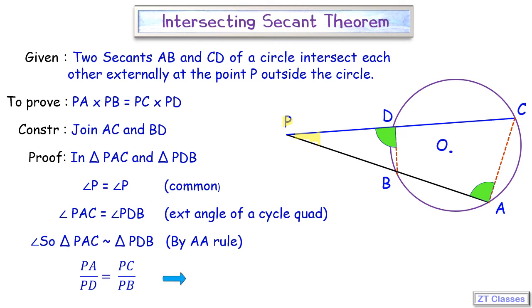Cross multiplying it will get PA into PB is equal to PC into PD. And that's what we had to prove. Hence proved.